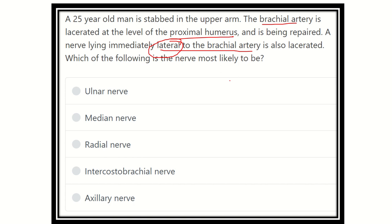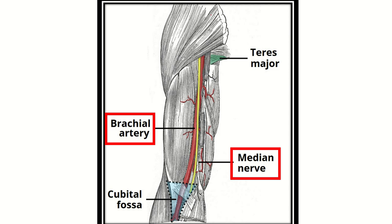Now see the picture of the arm and the different structures present in the arm. Here is the arm, here is the cubital fossa or elbow, and we can see the brachial artery running downward. A nerve lies lateral to the brachial artery in the proximal part, then it is anterior in the middle part, and in the lower or distal part this nerve is medial to the brachial artery.